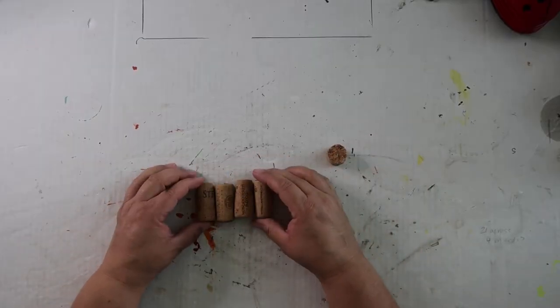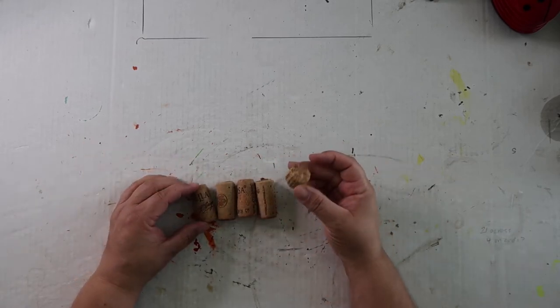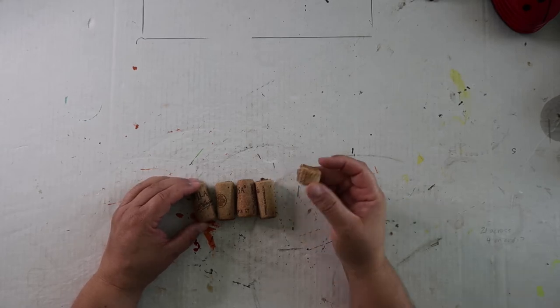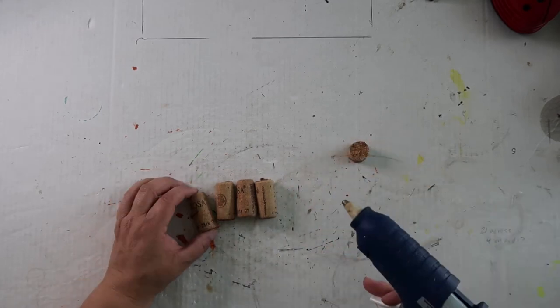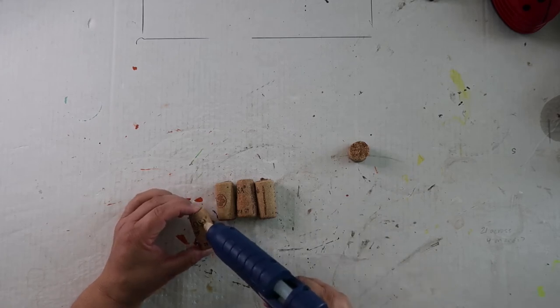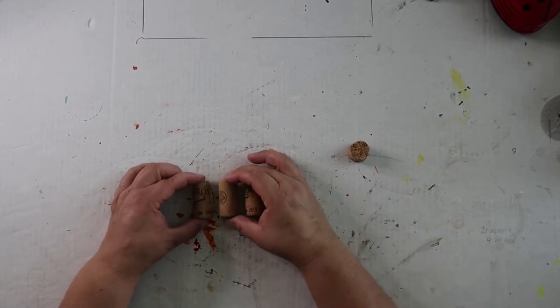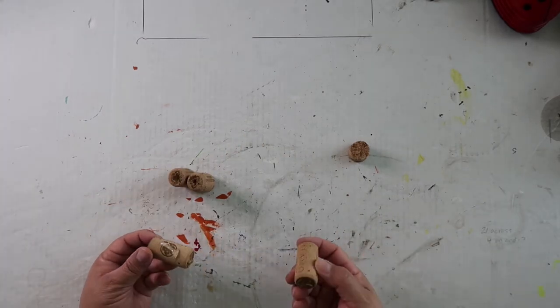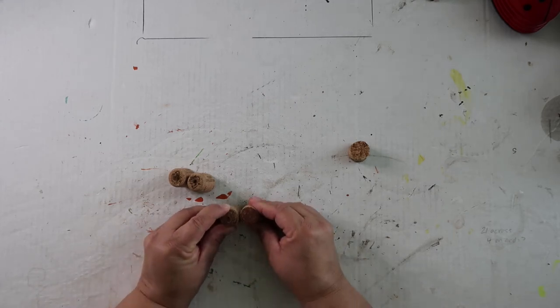DIY number three: For this you're going to need four wine corks, they don't have to be the same really or anything like that. And then I had cut for the other project, I'd cut a wine cork in thirds and so I'm just using another chunk of it for this one. So this one is also again very easy, we're just gluing two of them together.